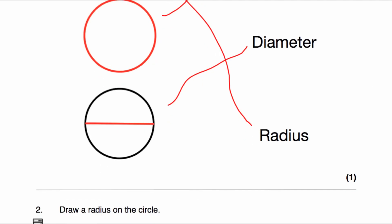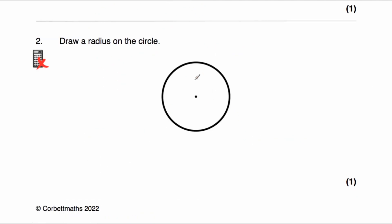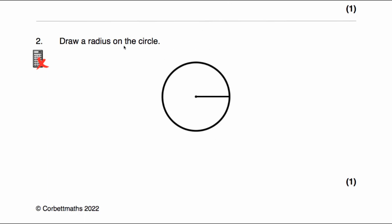Let's look at question two. We've been given a circle and the center of a circle, and we've been asked to draw a radius. Remember, a radius is a line going from the center of the circle to a point on the circle. We could draw it in any direction — up, across, or anywhere. So that is a radius on the circle.